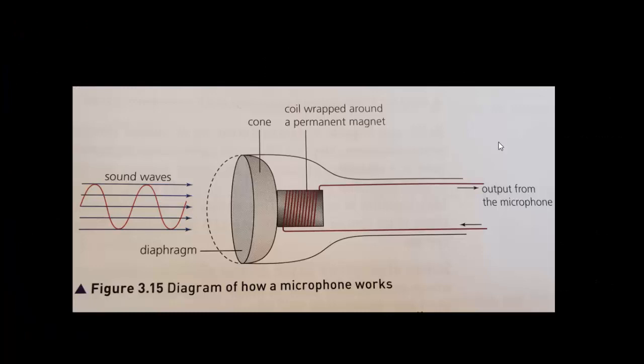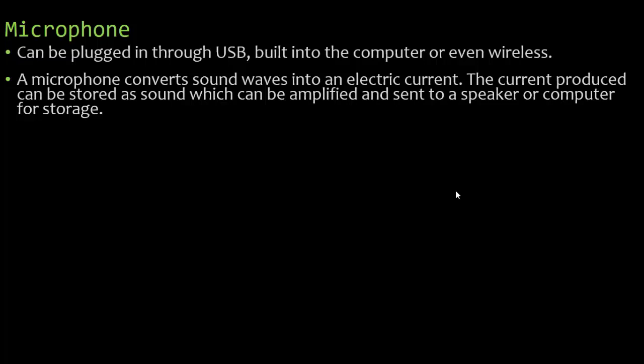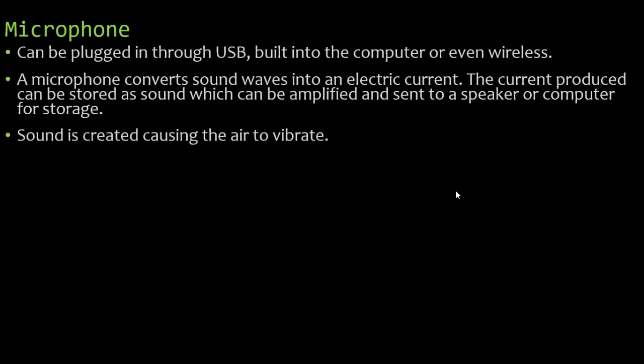A microphone has a diaphragm which picks up the sound waves you are producing. It goes through a cone, and there's a coil inside wrapped around a permanent magnet, which converts it into a digital sound. A microphone can be plugged in through USB, built into the computer, or wireless. It converts sound waves into an electric current, which can be stored as sound, amplified, and sent to a speaker or to a computer for storage. Sound is created causing the air to vibrate — it's just air molecules vibrating together, carrying the sounds being made.